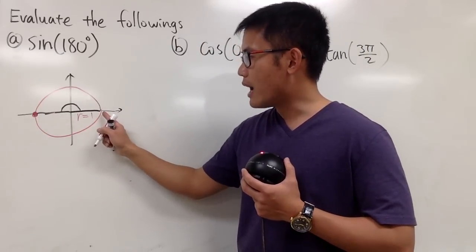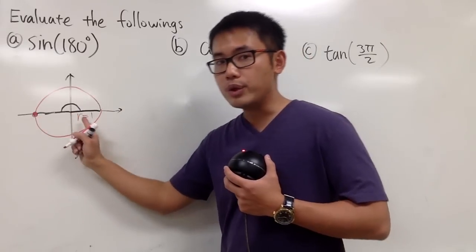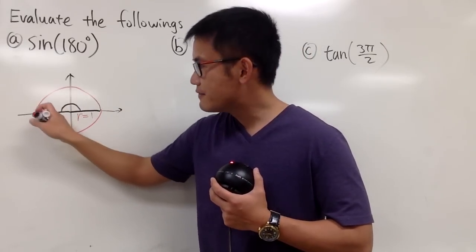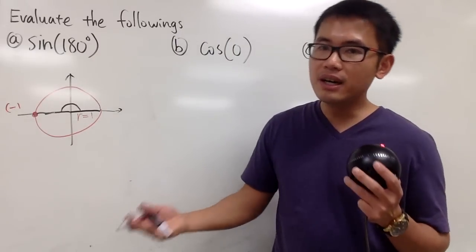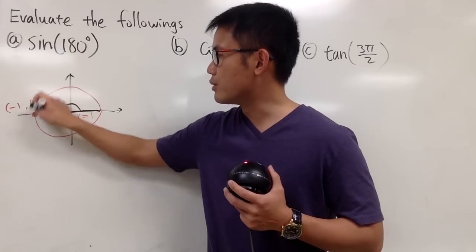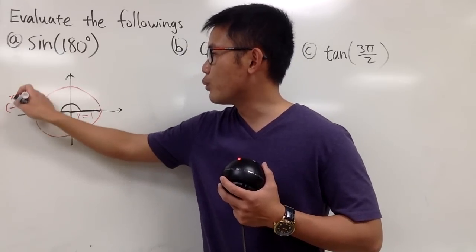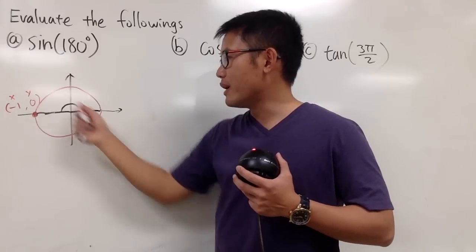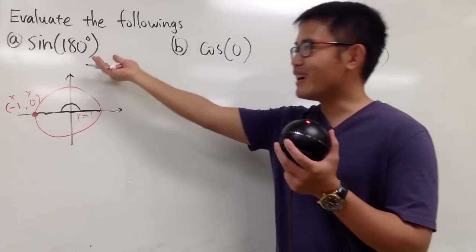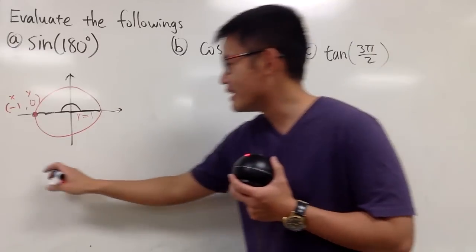First of all, because r is equal to 1, from here, we go to the left one time. So the x value of this point is negative 1. And because we are on the x-axis, the y value is 0. So x is negative 1, y is equal to 0. Now when you have the x, y, and r value, you can figure out the sine value of this angle right here.